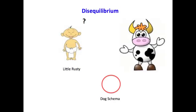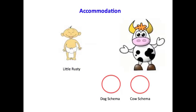Little Rusty suddenly sees a cow, and he doesn't know what in the world to do with it. He's at a loss, and he's got to figure out: is it a dog? And he says dog, and Mama says, no, Puckin, that most certainly is not a dog — that's a cow. At this point, Little Rusty's brain hurts, but he decides that he might better accommodate this new experience by building a new schema. So he goes through accommodation, and he now assigns the cow into that schema, and he has equilibrium again.